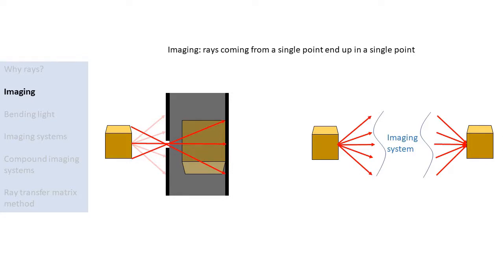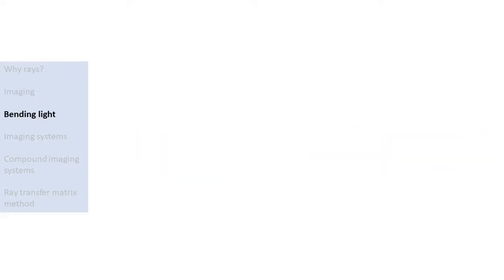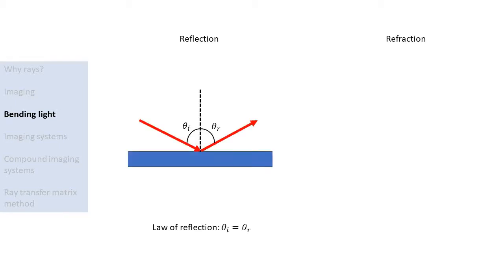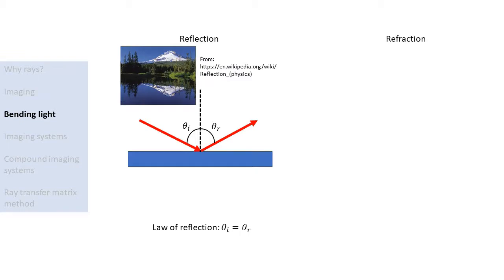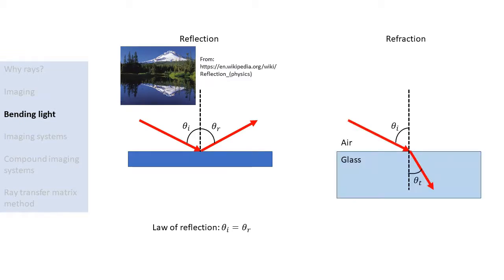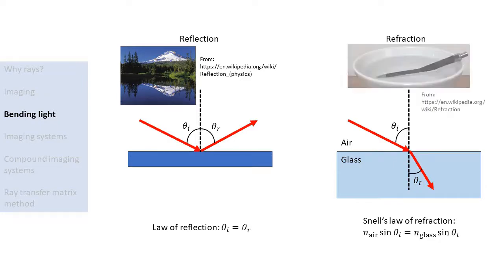So if we have an object whose points emit rays of light in all directions, the purpose of an imaging system is to make sure that all those rays end up in a single point again. If we don't want to block most of the light as we do in a pinhole camera, but rather want to capture most of the light, then we have to find a way to change the direction of the rays so that they converge again. Therefore we ask: how can we change the direction of light rays? There are two mechanisms: reflection and refraction. When light reflects from a surface, its angle of incidence with respect to the surface normal is equal to the angle of reflection — this is what happens with mirrors or water surfaces. When light refracts at an interface between two materials, the angle of refraction is given by Snell's law. Each material has its own refractive index that determines by how much the angle of the ray changes. This change of the ray angle explains why objects can look distorted if they're partially underwater.